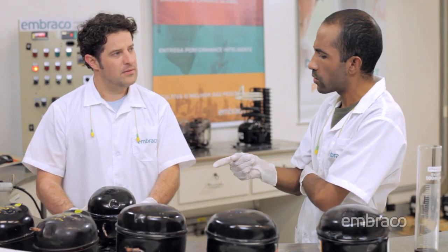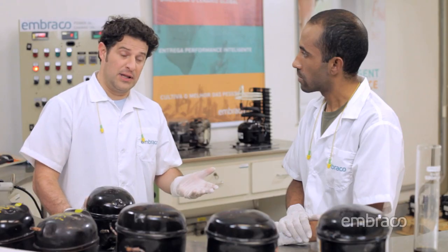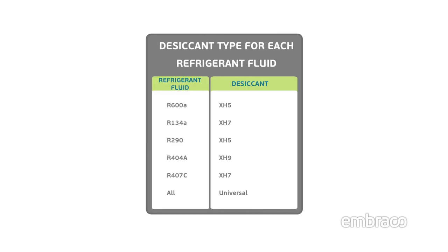But isn't the filter dryer's function to remove moisture from the system? Actually, the vacuum process, if properly executed, will remove almost all the moisture in the system, and the filter dryer will remove any residue that might still be present. This is the second problem related to moisture in the system, since the filter dryer must always be changed together with the compressor, paying attention to the filter type recommended by Imbraco for each refrigerant.